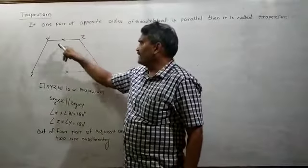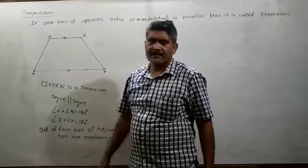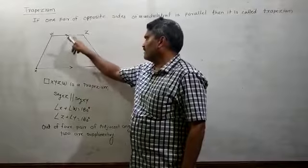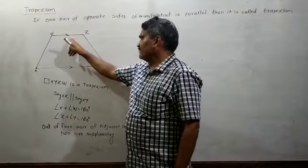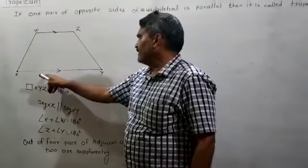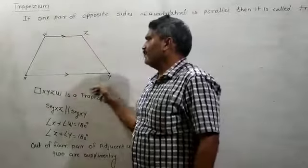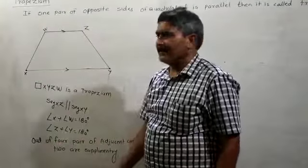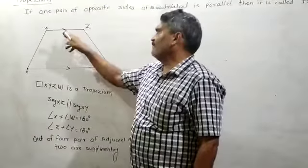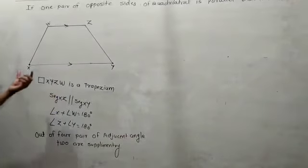Here, this side is parallel to this side. This arrow indicates that this side is parallel to this side — this side is opposite to this side. This side is side XY. You have to say that one pair of opposite sides in this quadrilateral is parallel. This side is not parallel to this side, so one pair of the opposite sides are parallel, and then the quadrilateral is called a trapezium.